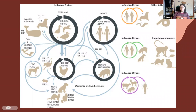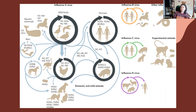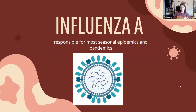We know the most about influenza A. It infects a lot of different species, including humans, but also birds and mammals. Whereas influenza B, C, and D — we know a lot less about, but we know a few species they can infect. With B, for example, seals and sea lions can be infected. The most is known about influenza A, which is what we'll talk about first, as it's responsible for most seasonal epidemics as well as pandemics.